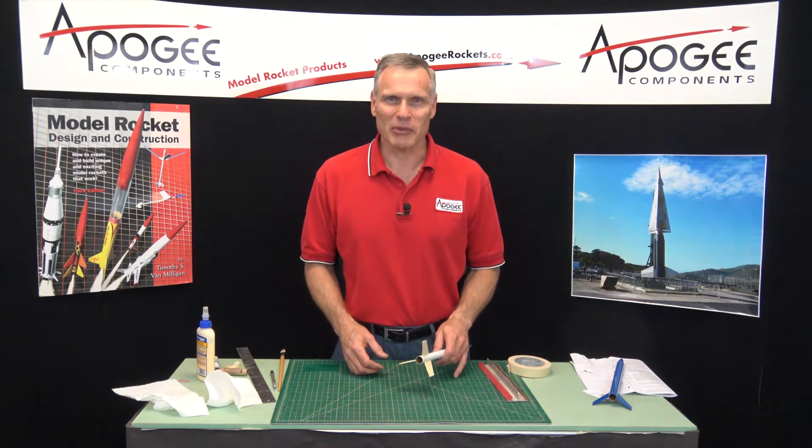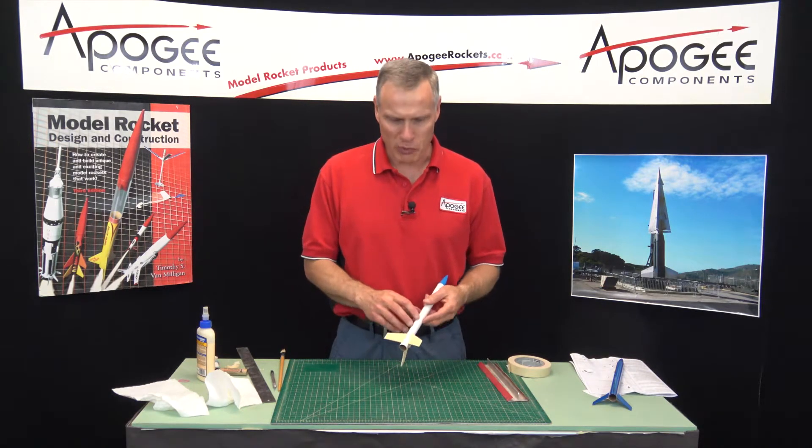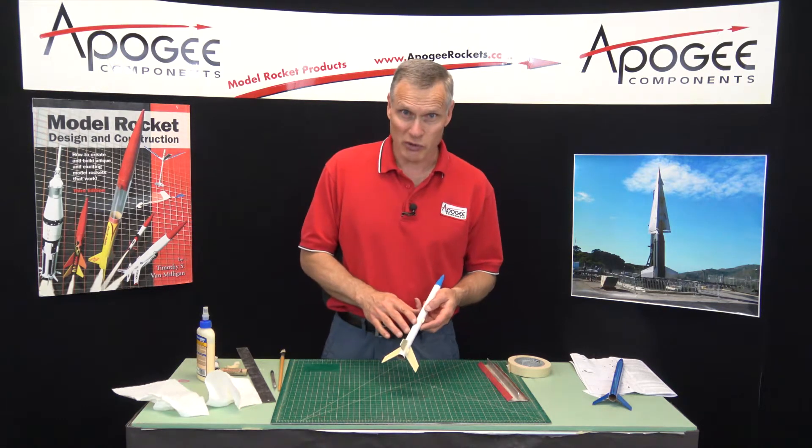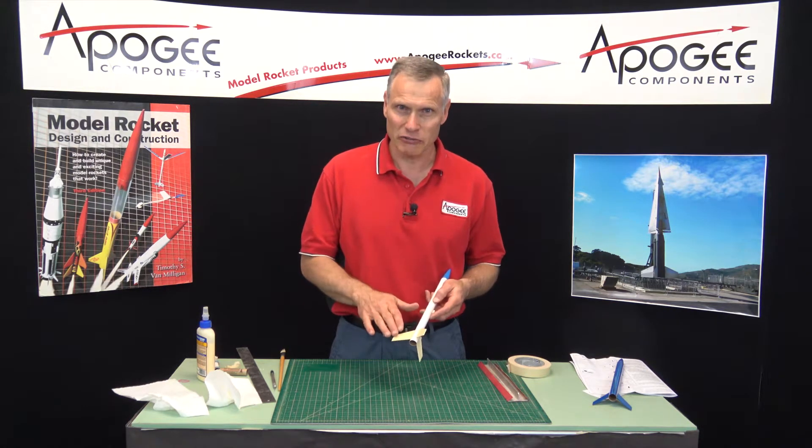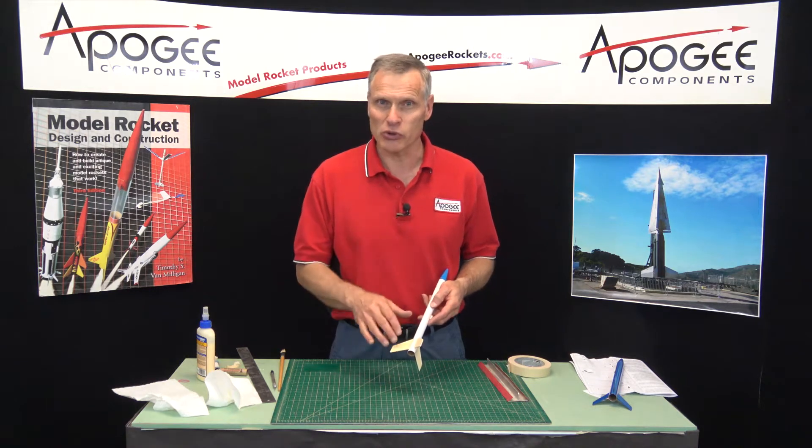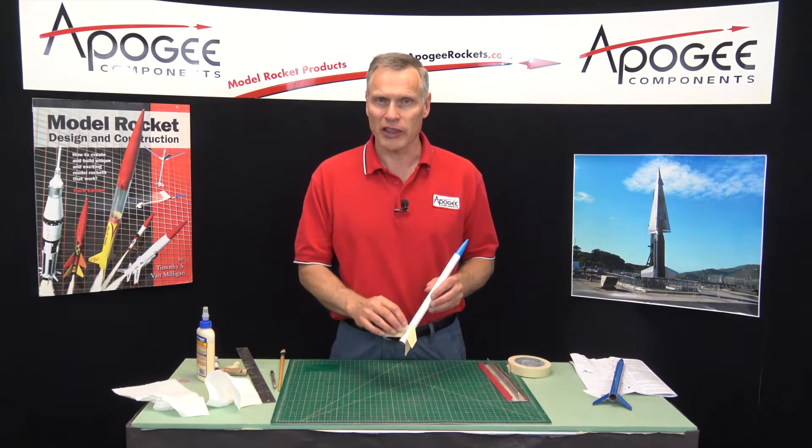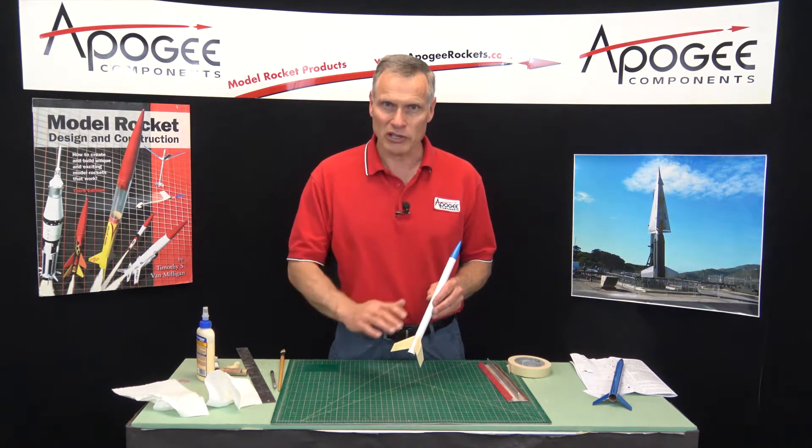Hi, I'm Tim Van Milligan from Apogee Components. We're in the process of building the Blue Streak rocket and we're at that point now where we're going to sand the fins to make them smooth so that the rocket flies higher and when you paint it, the paint looks a lot smoother.